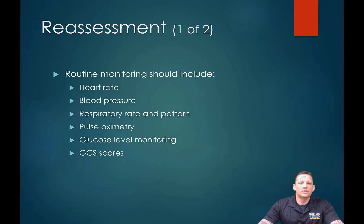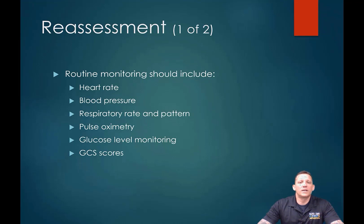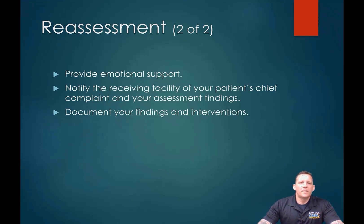GCS — eye, verbal, and motor: four, five, six. We're always looking for a GCS of 15 or as high as possible. A GCS of 8 or less means the patient is unable to protect their airway — a huge indicator that somebody is really far down a pathway. As somebody wakes up out of a seizure, coming from the postictal state, make sure you're giving them emotional support. They're going to wake up scared and not know what happened.